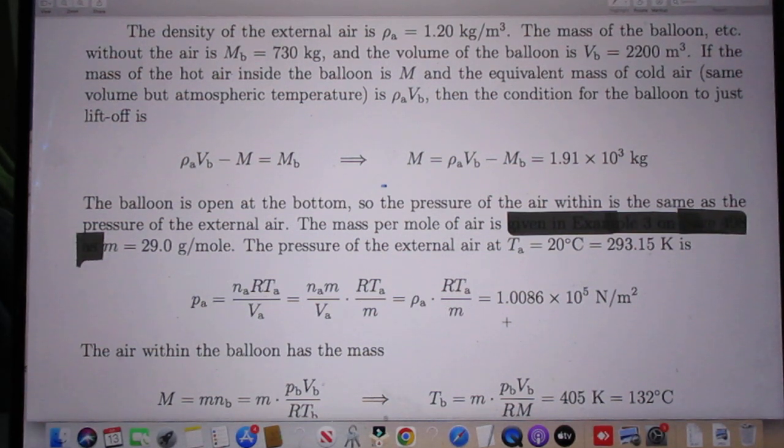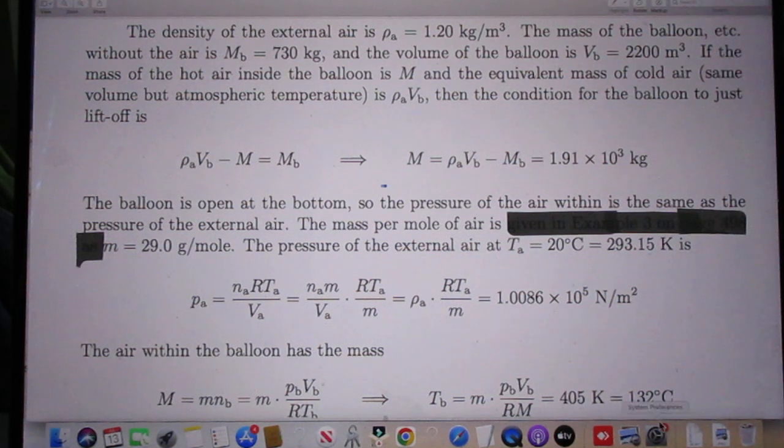So the air within the balloon has now this mass. M is the mass per mole, and n B is the number of moles. And what we find now is the temperature of the gas inside the balloon has to be 405 degrees Kelvin, which is 130 degrees centigrade.